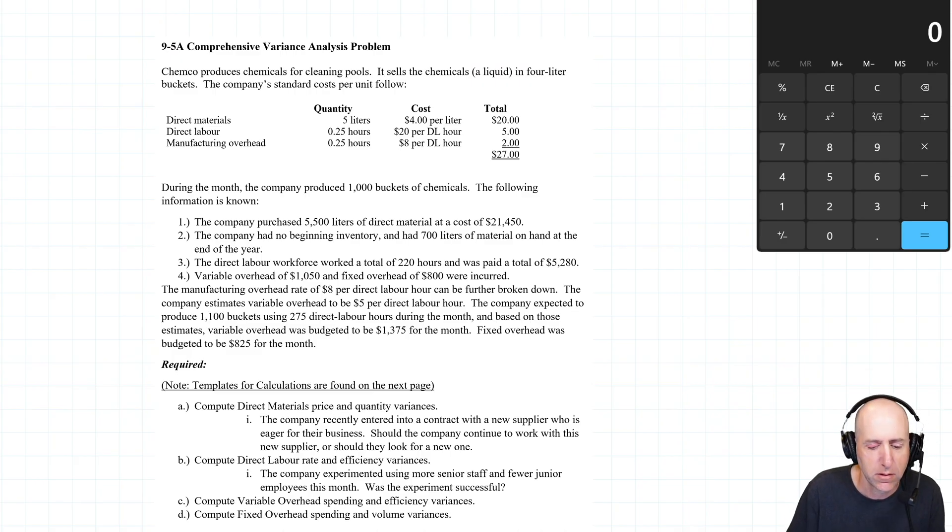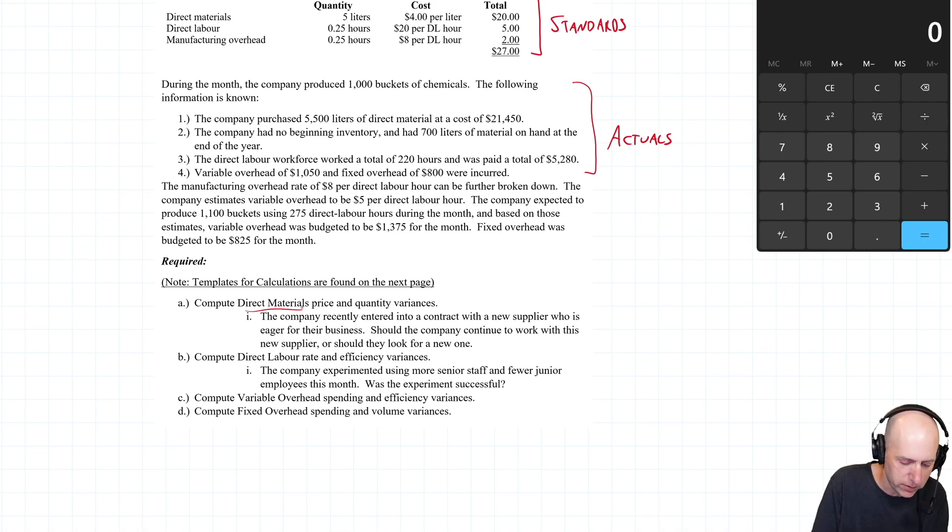The company's standard costs follow, and these are our standards. These are our standards, and of course we're going to compare them to actual information. During the month, the company produced 1,000 buckets of chemicals. The following information is known, and here is a bunch of actuals, and we're going to be comparing our standards to our actuals in computing materials variances, labor rate and efficiency variances, variable overhead variances, and fixed overhead variances. Rather than reading the whole thing at once, we'll just take it a piece at a time.